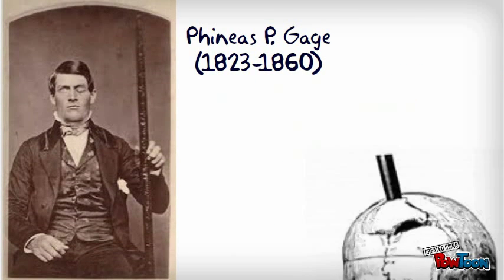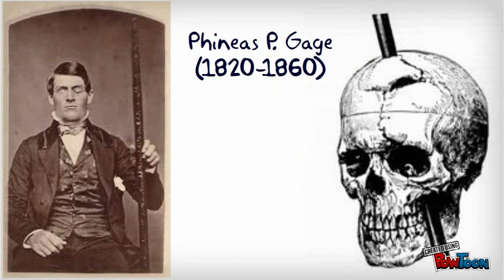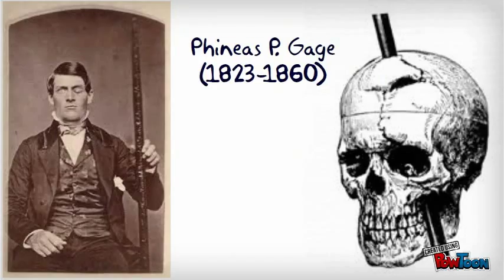Phineas Gage, an American railroad construction foreman, had a metal rod shot through his skull during a work accident, damaging part of his frontal lobes. He was able to function normally after healing, but his personality changed and he became odd, irritable, rude, and unpredictable. This case leaves us with the explanation that damage to the frontal lobes could result in loss of ability to subdue impulses and inflect emotions.